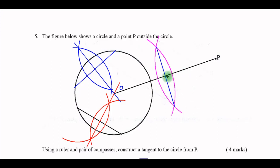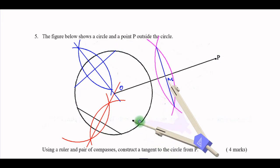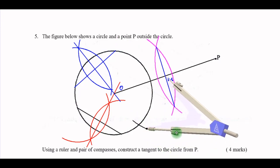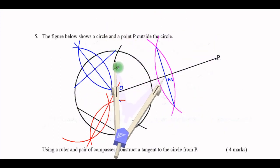This midpoint I call M, so OM equals MP — M is the midpoint of OP. From this midpoint M I use the distance OM as the radius and, using the compass, I mark where it meets the circumference of the circle — putting a mark there and also on the other side.